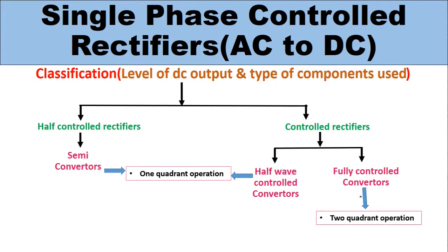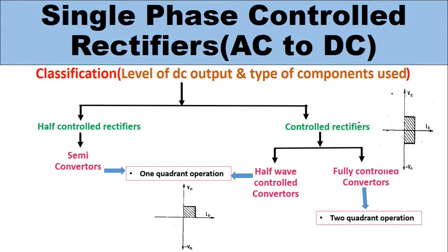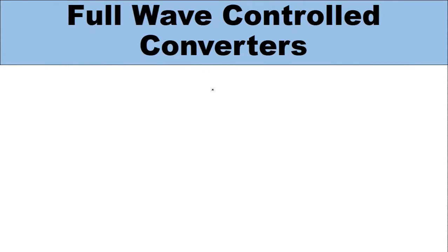Fully controlled rectifiers are two-quadrant rectifiers, exhibiting two-quadrant operation. When converters operate in the first quadrant, both average DC output voltage and average DC output current are positive. When controlled rectifiers operate in two quadrants, the output DC voltage can take positive as well as negative values, but the DC output current is always positive.